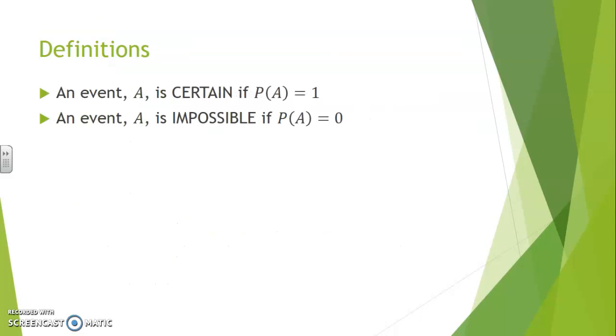Some last definitions. An event A is called certain if the probability of A is 1. An event A is called impossible if the probability of A is 0.